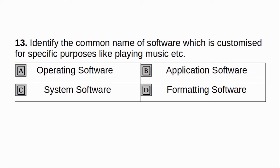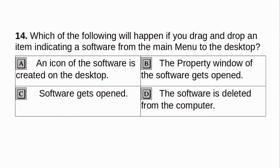Identify the common name of software which is customized for specific purposes like playing music etc. a. Operating software. b. Application software. c. System software. d. Formatting software. Answer: b. Application software. Which of the following will happen if you drag and drop an item indicating a software from the main menu to the desktop? a. An icon of the software is created on the desktop. b. The property window of the software gets opened. c. Software gets opened. d. The software is deleted from the computer. Answer: a. An icon of the software is created on the desktop.